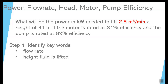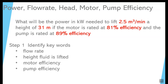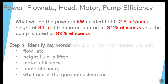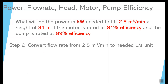The second keyword is how high you have to lift the water — in this case, 31 meters. Third, the motor efficiency is 81% and the pump efficiency is 89%, or 0.89. Plug those numbers into the formula. The unit the question is asking for is kilowatts.